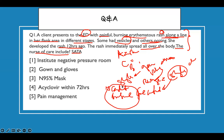Spend 20 to 30 seconds to come up with your answer. The answers I'm looking for: institute negative pressure room — this is consistent with airborne precaution strategy. Gowns and gloves — because this patient needs contact precaution. N95 mask — yes, this is what you need when you institute airborne precaution.